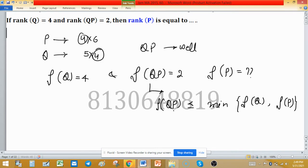This is at most equal to minimum of rank of P and Q, and greater than or equal to rank of Q plus rank of P minus the common factor. The common factor is 4, as you can see for the well-defined product.